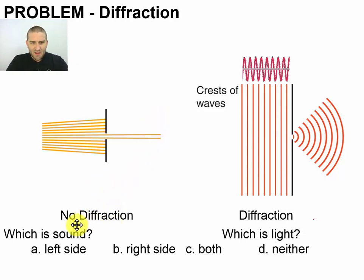So I would expect that sound can diffract through a hole and spread out on the other side. However, I expect that light should not have any diffraction. So I'm expecting that the left side is going to be light, so answer A. And for sound, I'm expecting that it will spread out with diffraction, so answer B.